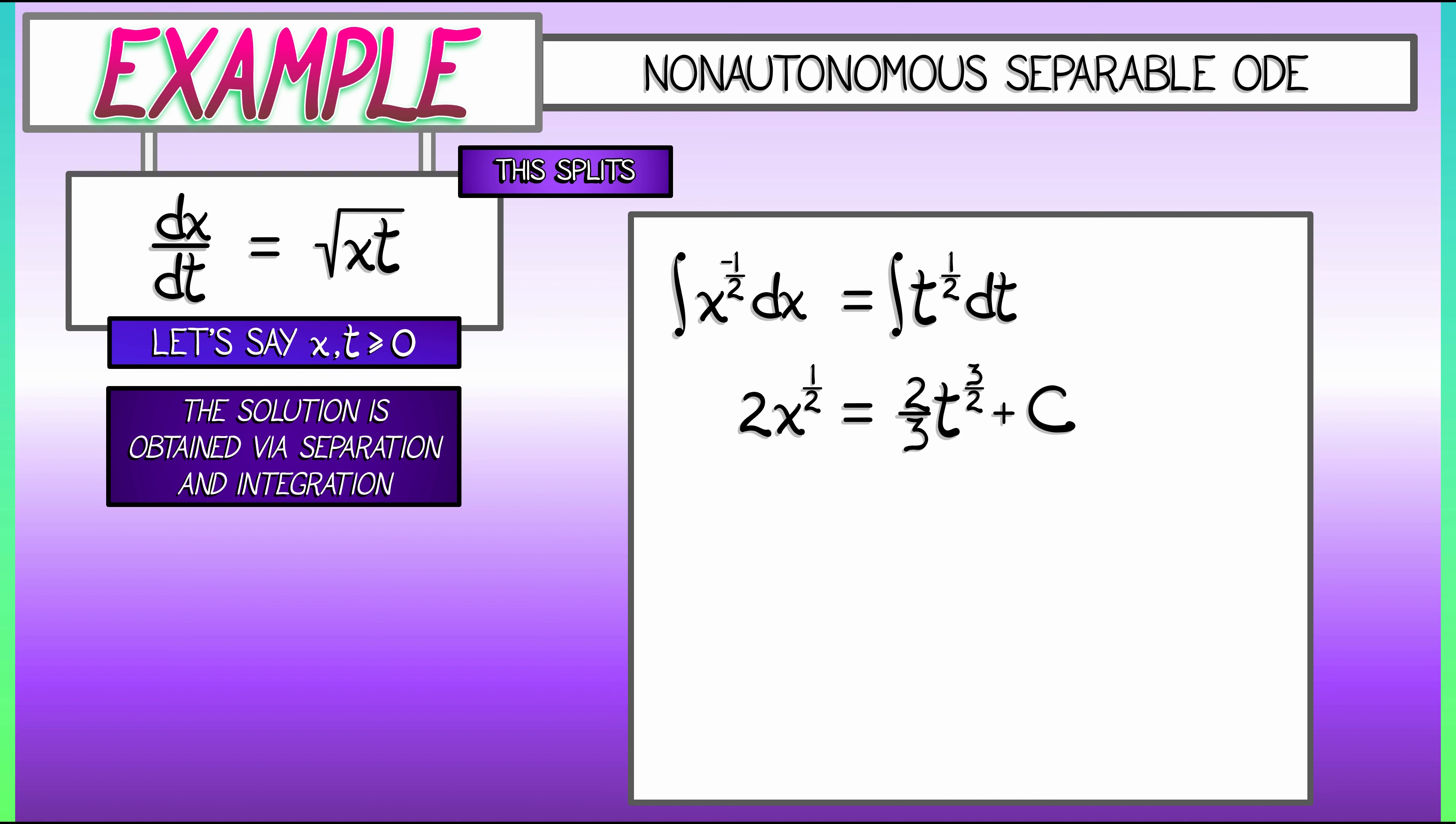Let's solve for x as a function of t. How bad is that going to be? Not bad at all. Square both sides, and then divide through by four, and what you're going to get is x is equal to quantity two-thirds t to the three-halves plus c squared times one-fourth.